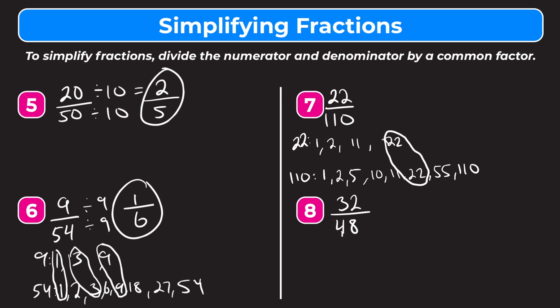So dividing both by 22: 22 divided by 22 equals 1, and 110 divided by 22 equals 5. Since 1 and 5 only share 1 as a common factor, we know this is the simplest form. Our answer is 1 fifth.